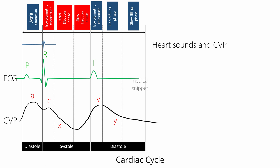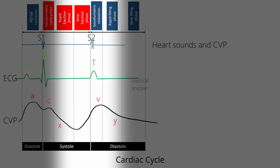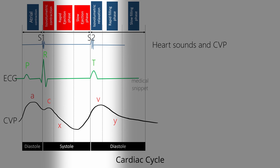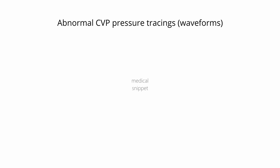Let's see the relationship between heart sounds and the CVP waveform. The A wave is seen before the first heart sound, the C wave is seen just after the first heart sound, and the V wave is seen just after the second heart sound. This completes the normal central venous pressure tracings. Now, with this basic knowledge, let's proceed to abnormal CVP pressure tracings.